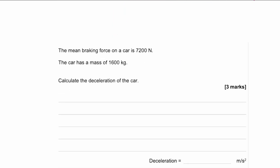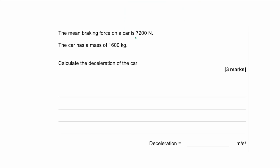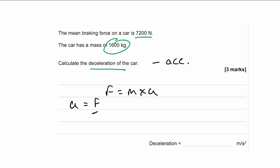The second question: the mean braking force on a car is 7,200 newtons and the car has a mass of 1,600 kilograms — calculate the deceleration. You should immediately identify the formula F equals mass multiplied by acceleration. Rearranging, acceleration equals force divided by mass. Remember, deceleration is just negative acceleration.